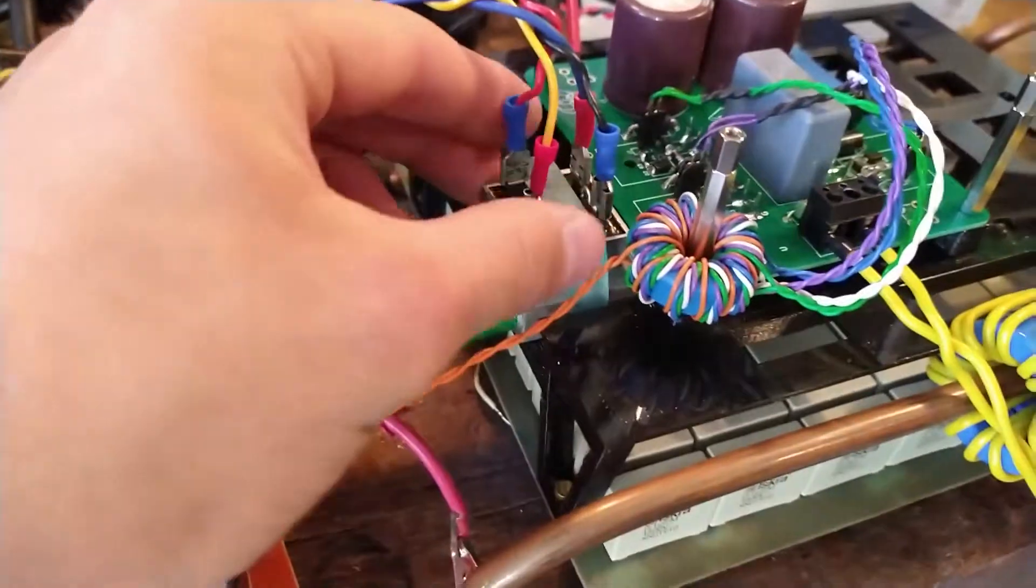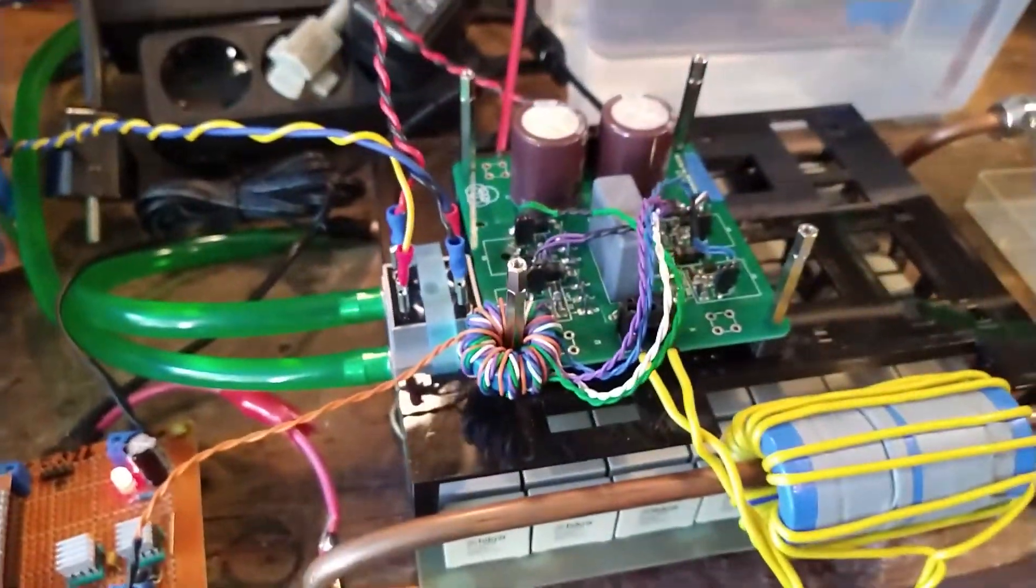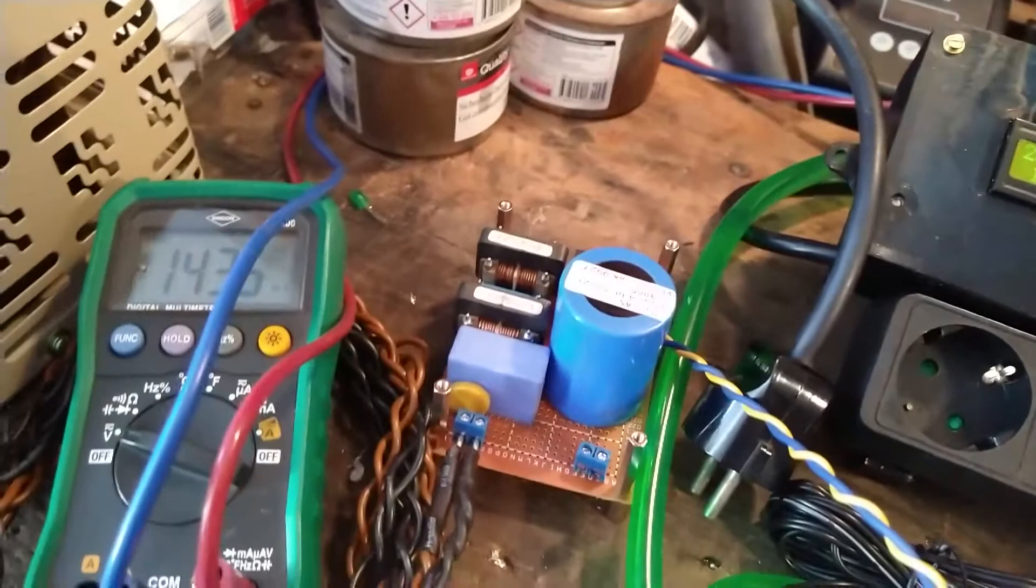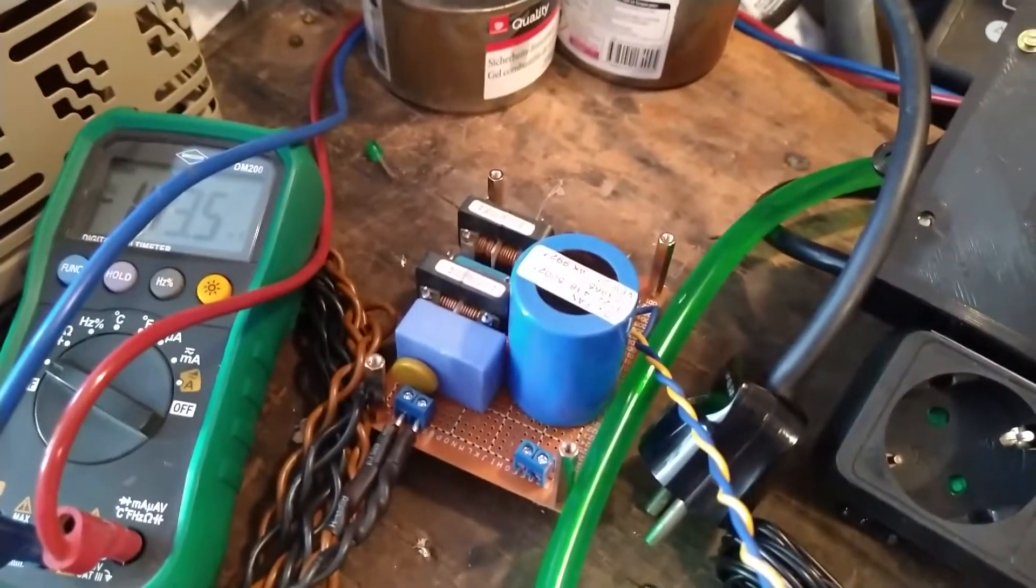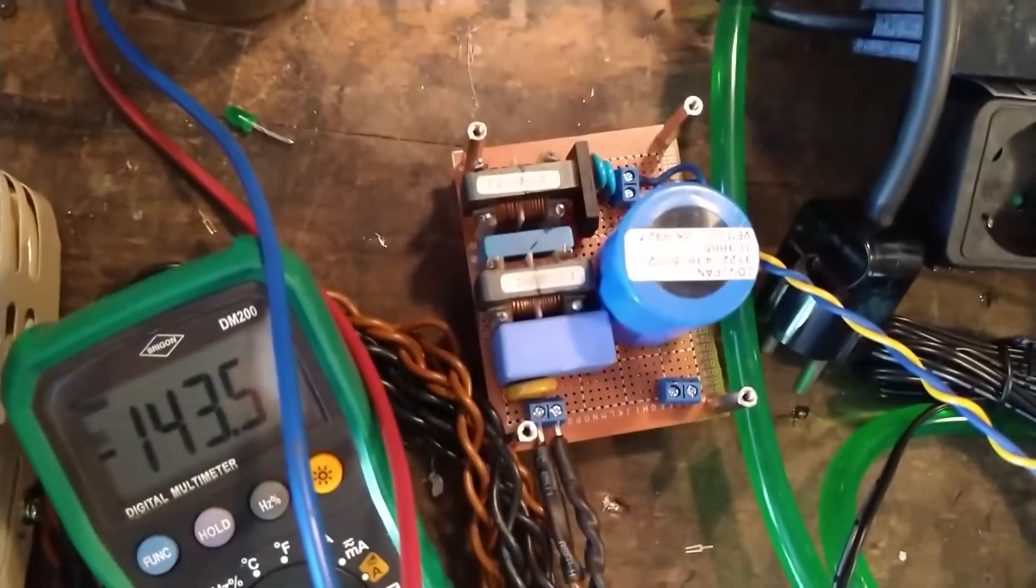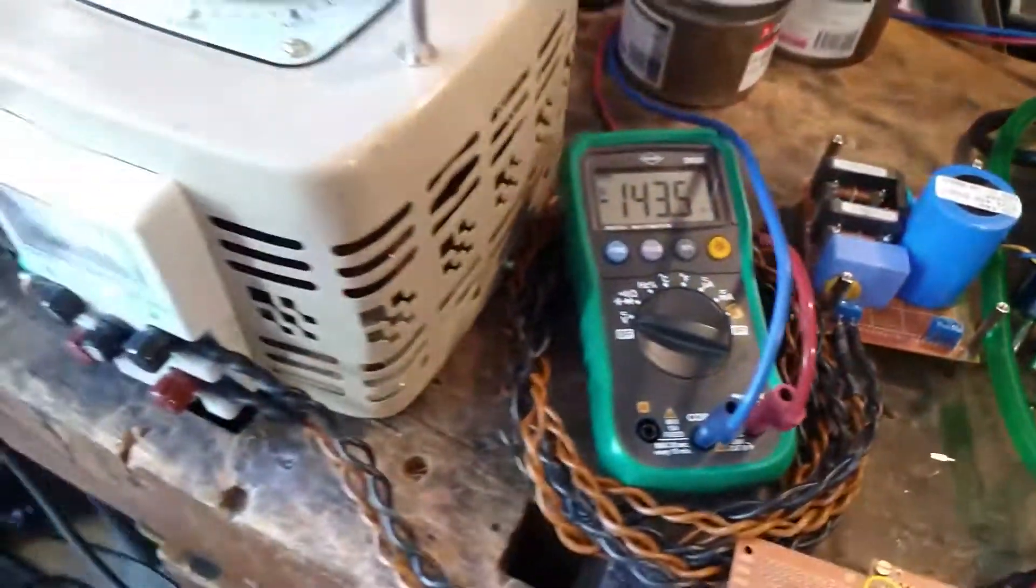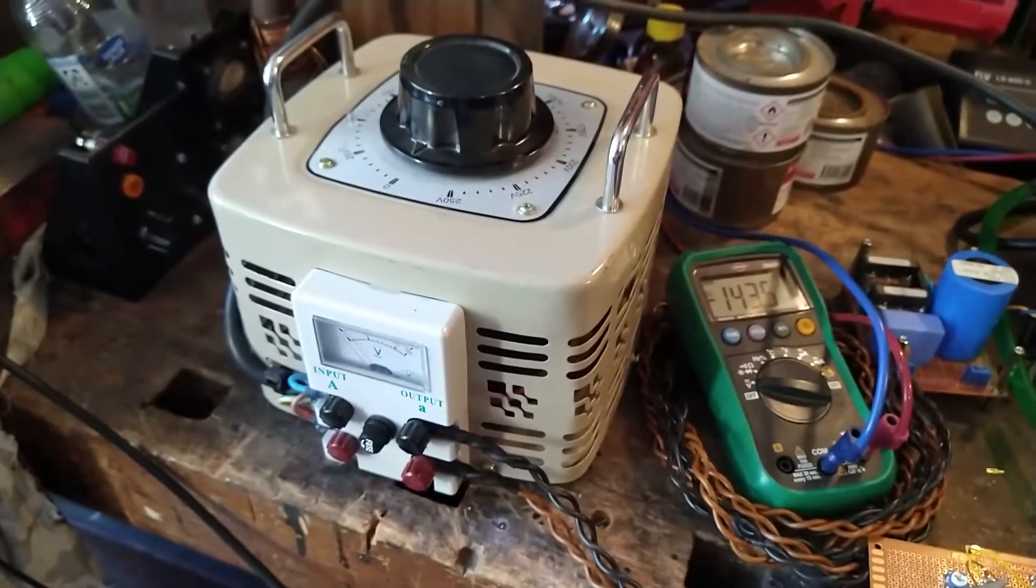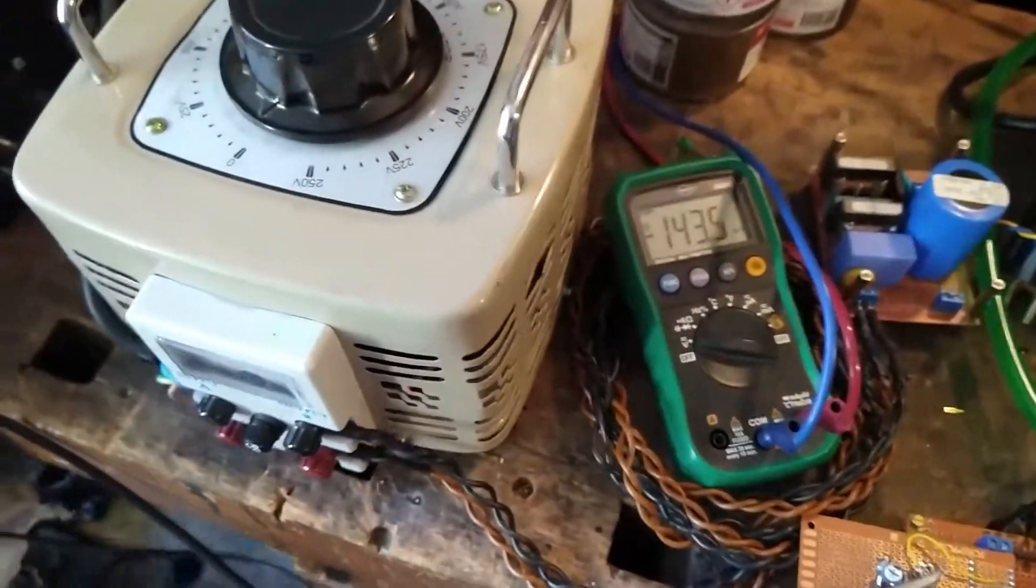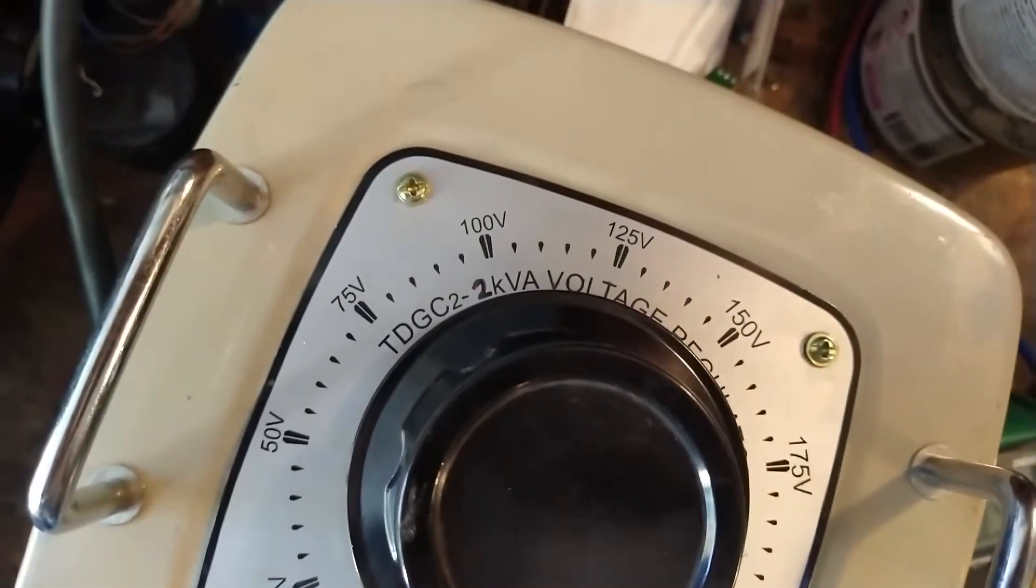We have a rectifier here that feeds the H-bridge circuit and in turn, it is connected to this filter and fed by an autotransformer. So this transformer is rated for I think 2 kVA.